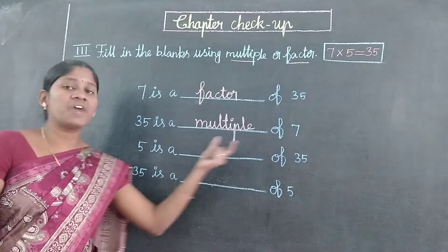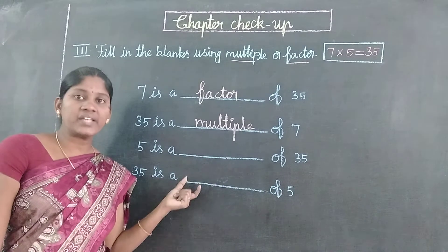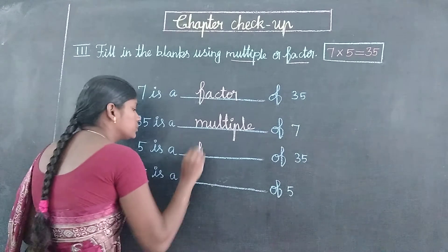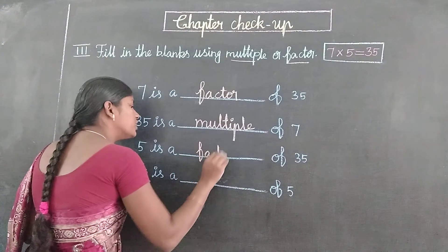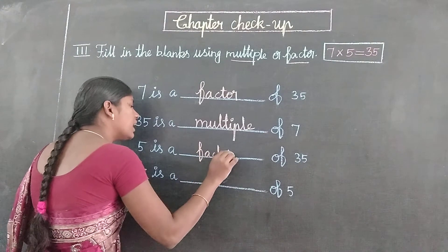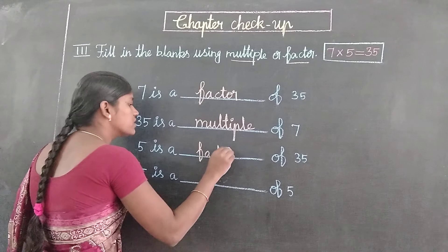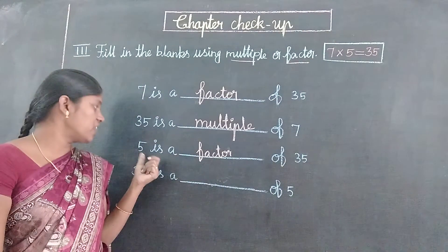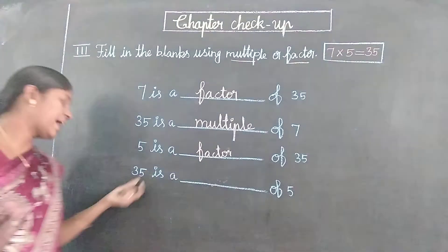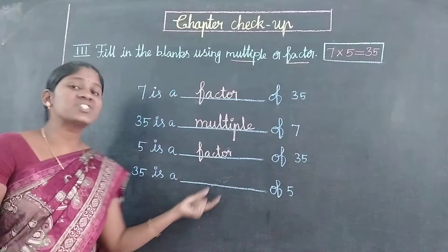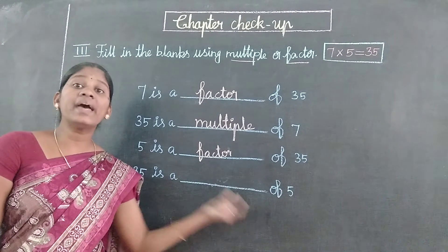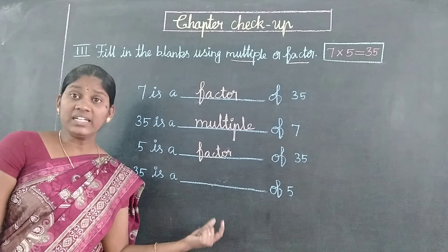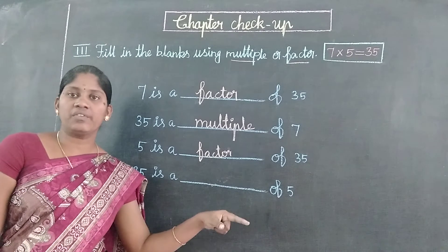The next one: 5 is a dash of 35. So, multiple.